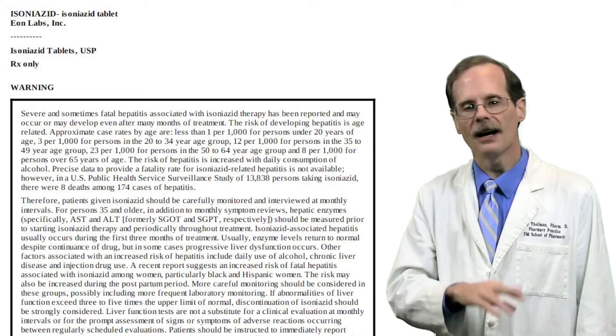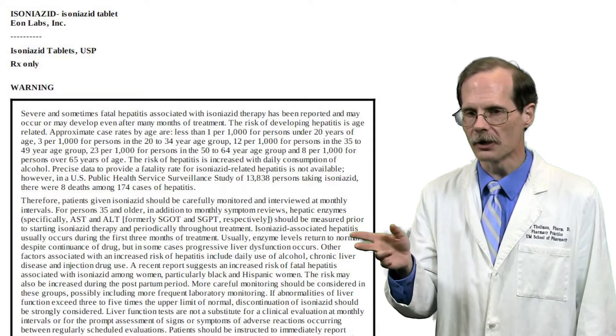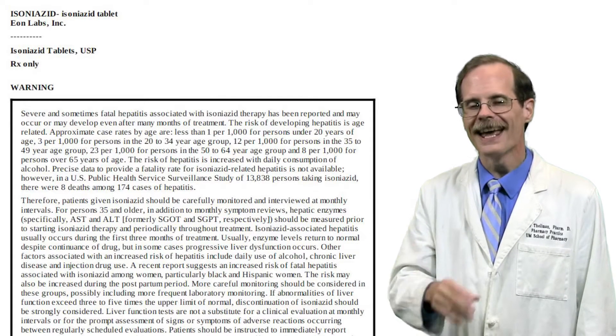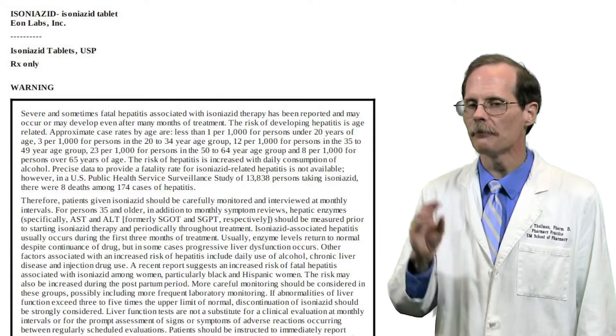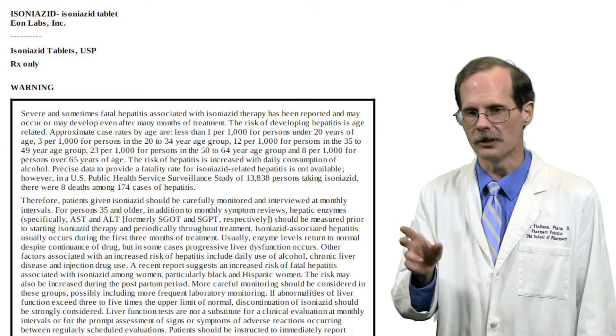Every clinician should be familiar with the black box warnings for the drugs they use. Isoniazid, which is used for tuberculosis, has a black box warning about potential liver damage from the drug and how to monitor for it. The dosage and administration section may have specific guidance on how to alter drug dosage in patients with hepatic or renal impairment.